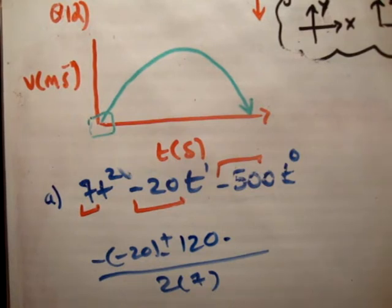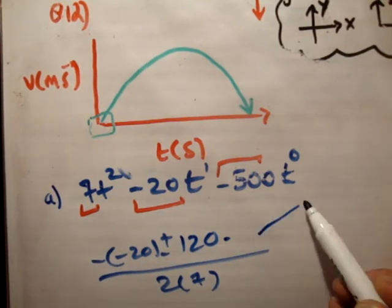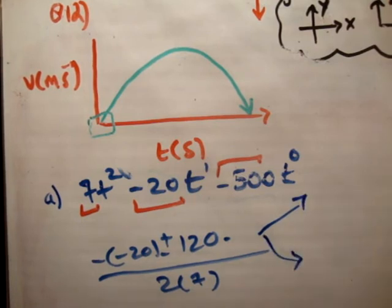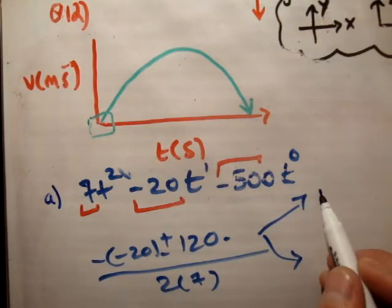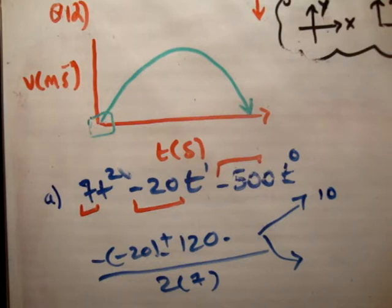Now, if you look at this, we're trying to find, well, it actually doesn't say what t is equal to. So there are two numbers here we're going to get. We're going to get 20 plus 120 over 14, or 20 minus 120 over 14. So one of them is 10, and one of them is equal to negative 7.14. Is that correct?